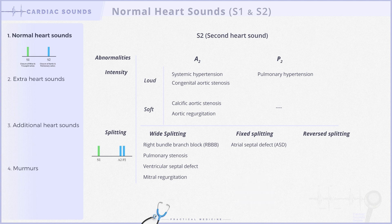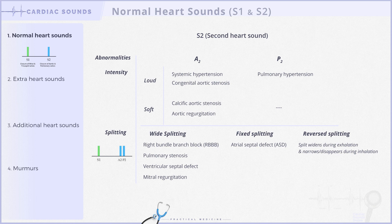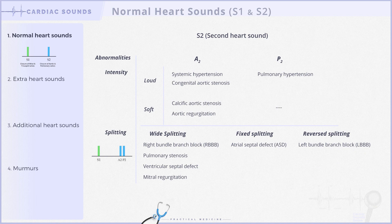Moving on to the final type of S2 splitting: reverse splitting. In simple terms, reverse splitting is the opposite of normal S2 splitting — the split widens during exhalation and narrows or disappears during inhalation. Unlike wide physiological splitting, reverse splitting indicates either delayed left-sided cardiac emptying or rapid emptying of the right side of the heart. Reverse splitting is observed in left bundle branch block, aortic stenosis, coarctation of the aorta, and patent ductus arteriosus.